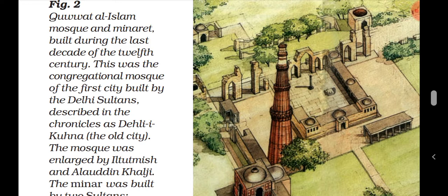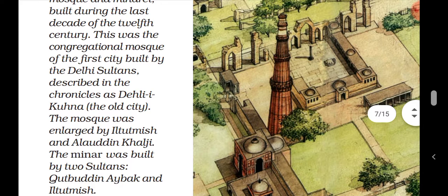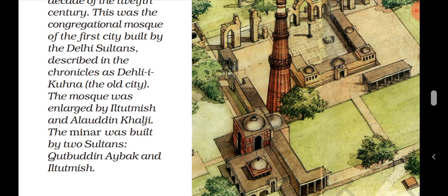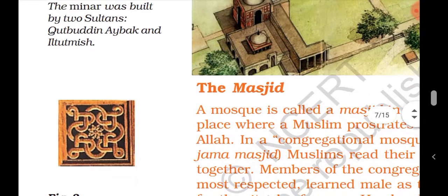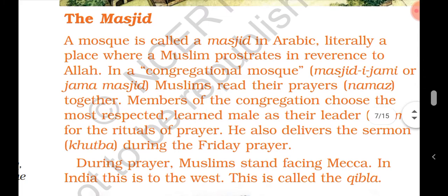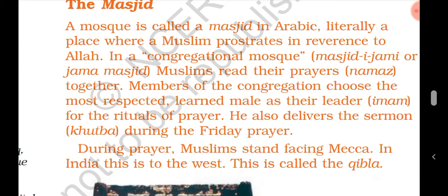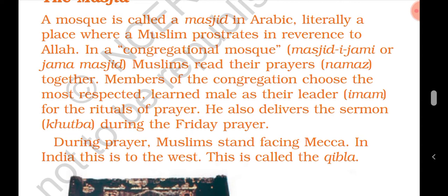The minaret — the Qutb Minar — dates to the last decade of the 12th century. It was the congregational mosque's minaret of the first city built by the Delhi Sultans. A mosque is called a masjid in Arabic, literally a place where Muslims prostrate in reverence to Allah. In a congregational mosque — masjid-i-jami or Jama Masjid — Muslims read their prayers (namaz) together. The Jama Masjid in Delhi is one such important mosque.